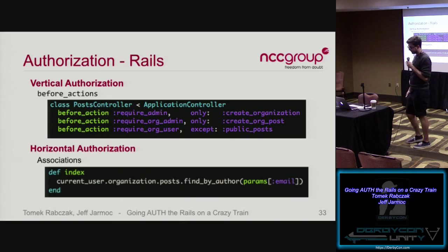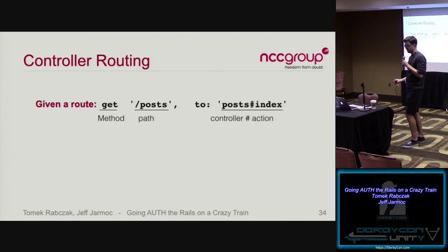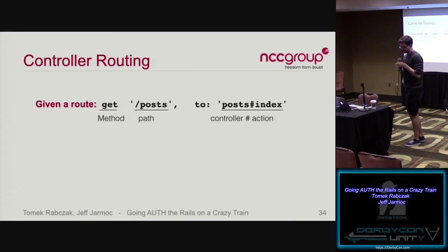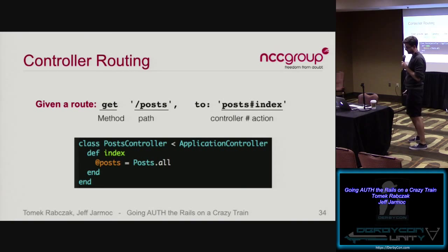In routes.rb you specify an HTTP method, a path, and point it to a controller action — the controller is a class and the action is a method within that class. A typical Rails controller inherits from ApplicationController. The ApplicationController is the main class all controllers inherit from by default, so site-wide authorization and authentication before_actions are commonly placed there, along with things like 'protect_from_forgery' which is generated automatically.